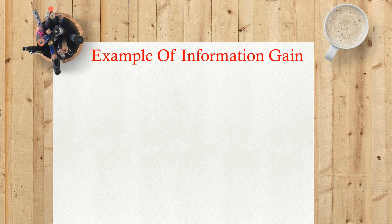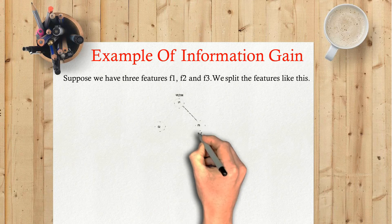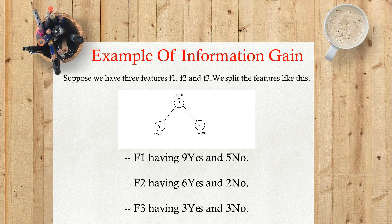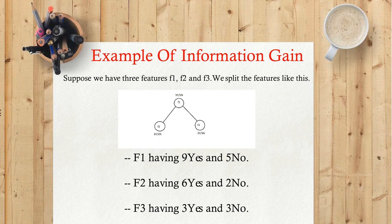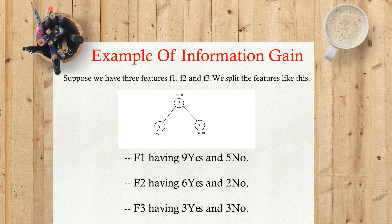Example of information gain: Suppose we have three features F1, F2, and F3. We split the features like this: F1 having 9 Yes and 5 No, F2 having 6 Yes and 2 No, F3 having 3 Yes and 3 No.